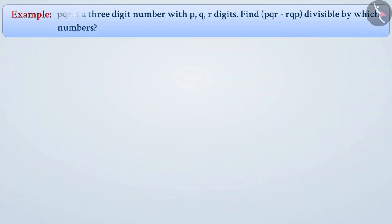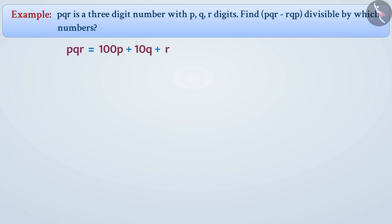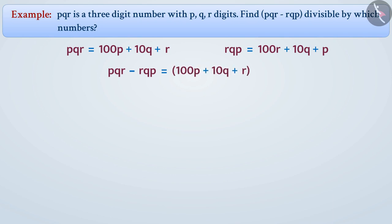pqr is a three-digit number with digits p, q, r. Find which numbers pqr minus rqp is divisible by. We can write pqr as 100p plus 10q plus r. Similarly, we can write rqp as 100r plus 10q plus p. In this way, pqr minus rqp equals 100p plus 10q plus r, minus 100r plus 10q plus p.